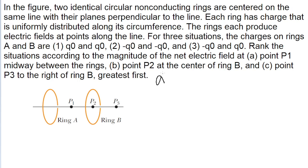Let's start with part A of the problem, where we're ranking those three scenarios at the central point P1. In scenario one, where both rings are positively charged, there are electric field lines pointing away from the rings. Remember that electric field lines, by convention, point away from positive charges and towards negative ones.